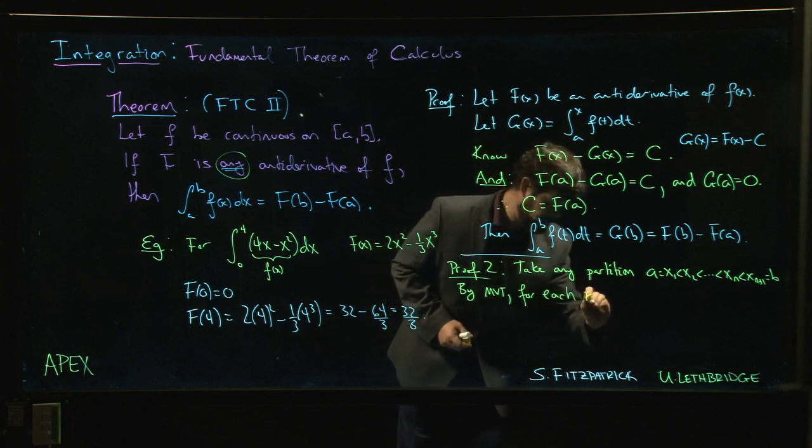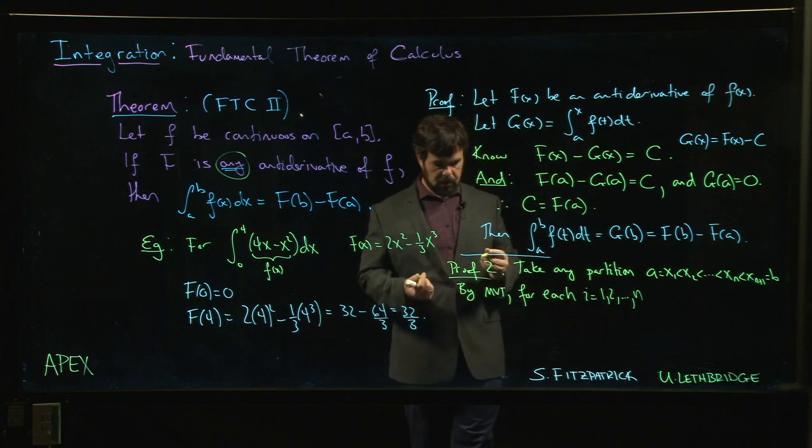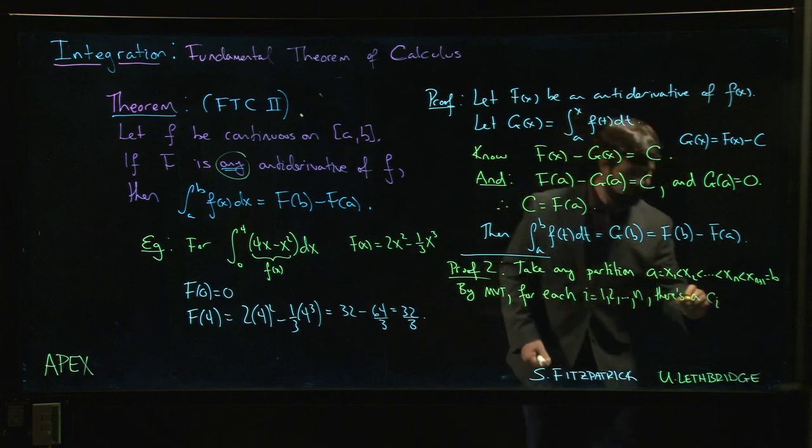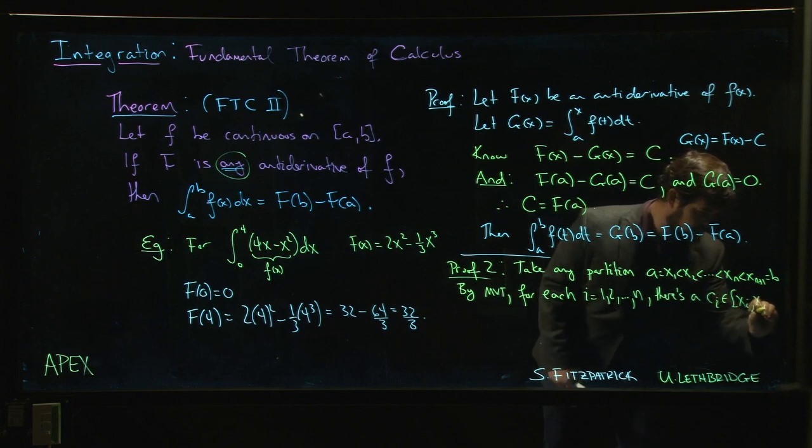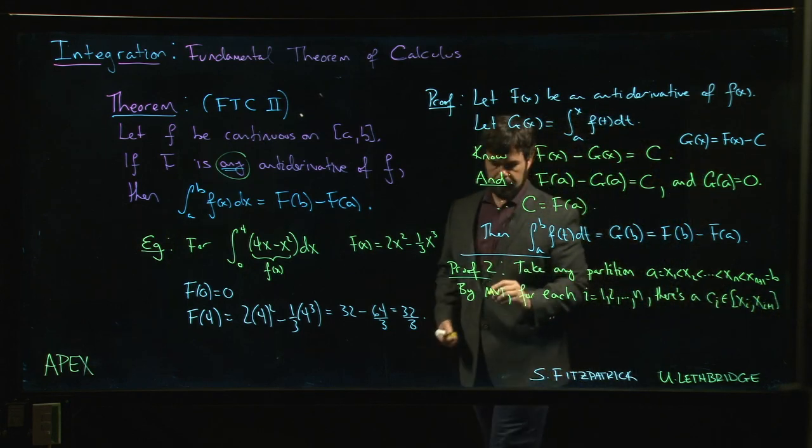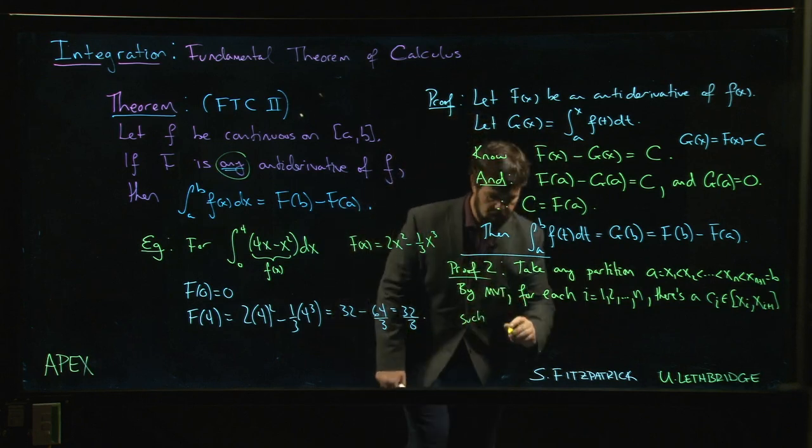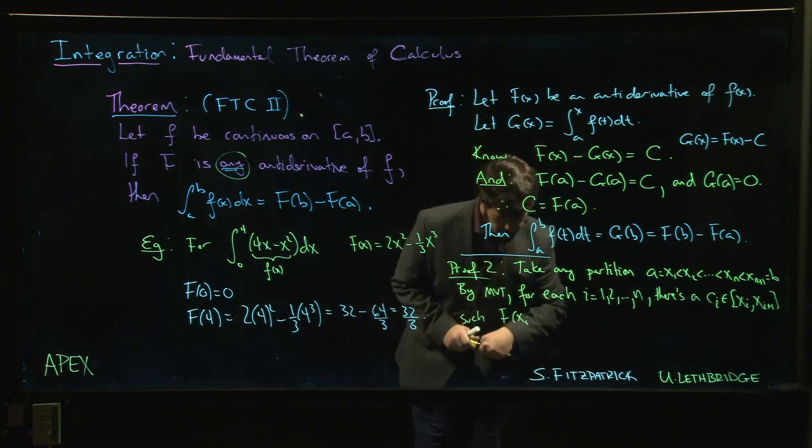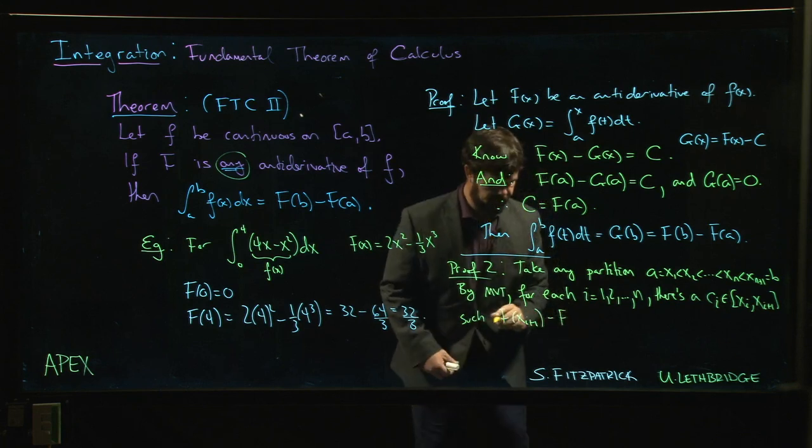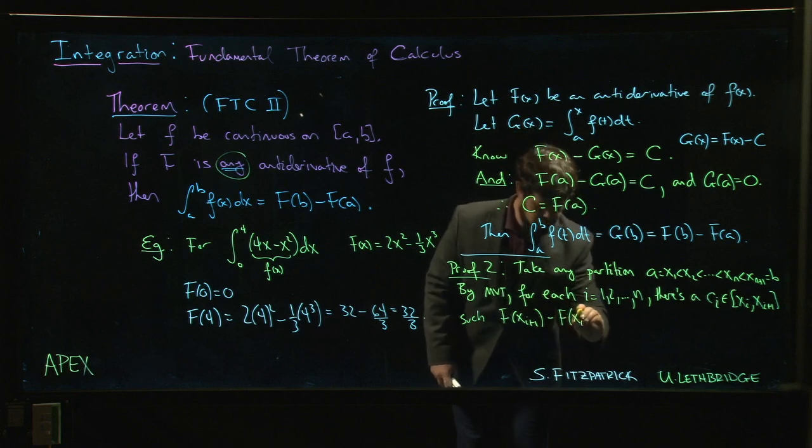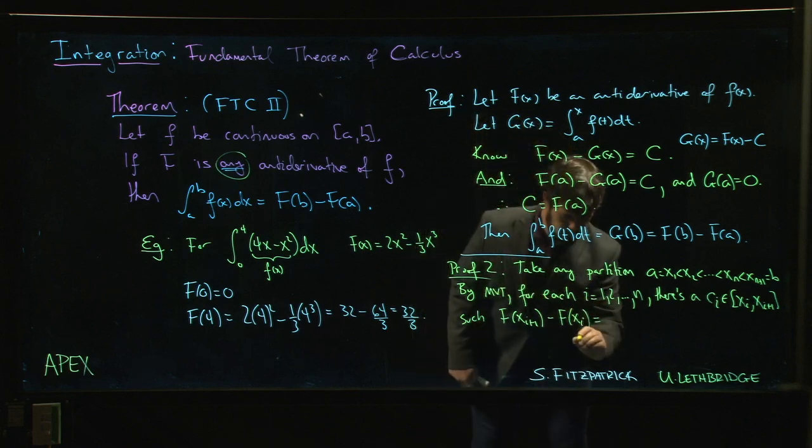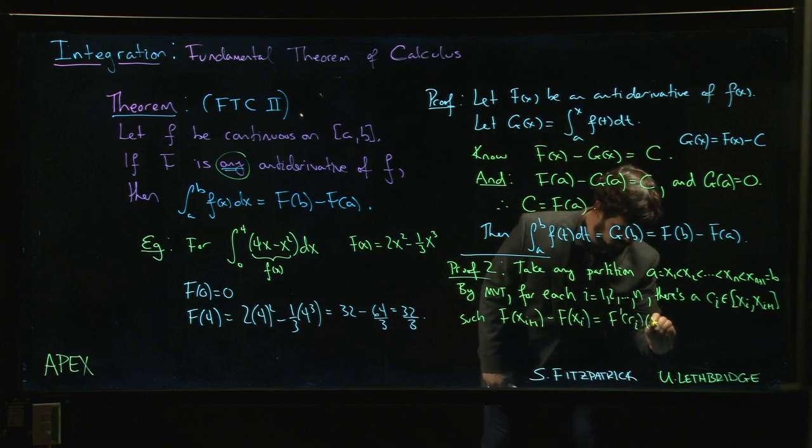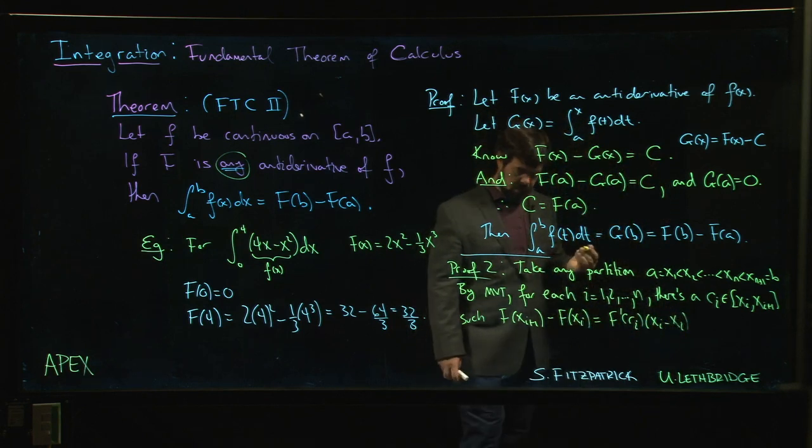For each i starting at one and going to n, there's a ci between xi and xi+1 such that if I did big F at xi+1 minus big F at xi, I would get big F prime at that ci times xi+1 minus xi.